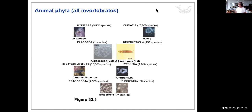Here are all the invertebrate animal phyla with approximate species counts. Porifera (sponges): about 5,000. Cnidaria: about 10,000 species. Platyhelminthes (flatworms): about 20,000 species. Rotifers are largely marine and very small — we won't cover those.